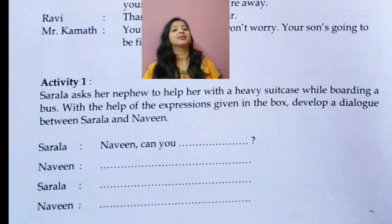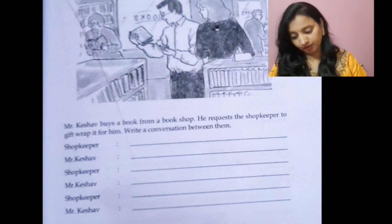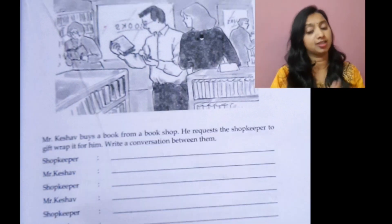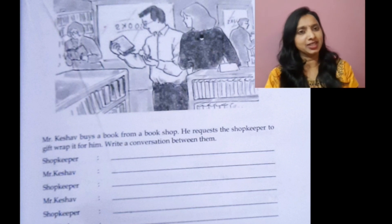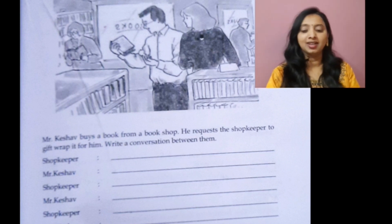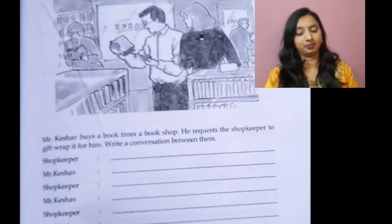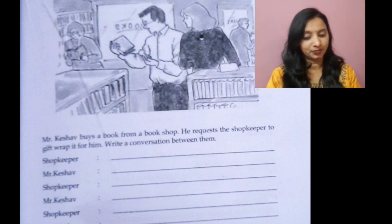Okay, let's go to the next activity. Mr. Kesho buys a book from a bookshop and requests the shopkeeper to gift wrap it for him. Write a conversation between them. Shopkeeper: 'Excuse me, sir, how can I help you?' Mr. Kesho: 'Could you please gift wrap it for me?' Shopkeeper: 'For sure, please give it to me.' Mr. Kesho: 'Thank you for gift wrapping it for me.' Shopkeeper: 'You're welcome, sir.'